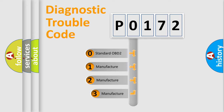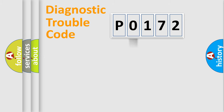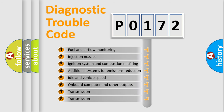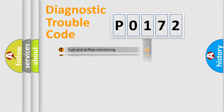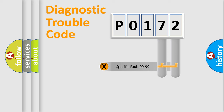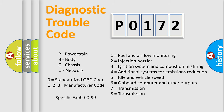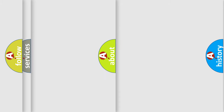If the second character is expressed as zero, it is a standardized error. In the case of numbers 1, 2, or 3, it is a more specific expression of a car-specific error. The third character specifies a subset of errors. This division is valid only for the standardized DTC code, and only if the second character is expressed by the number zero.